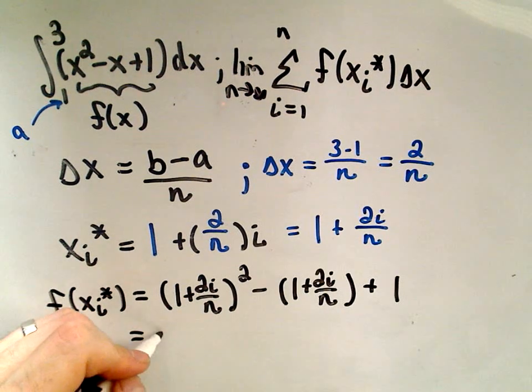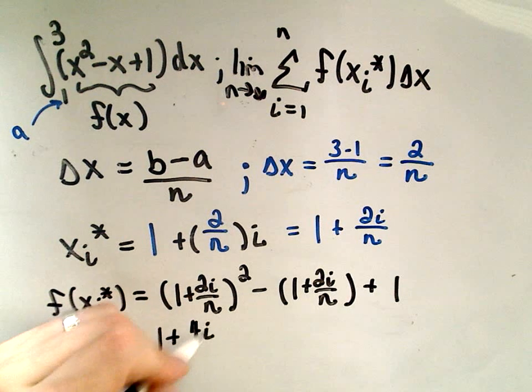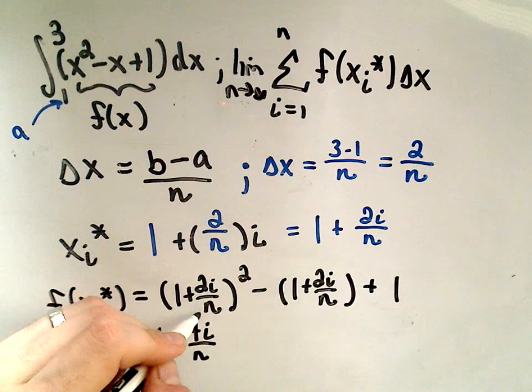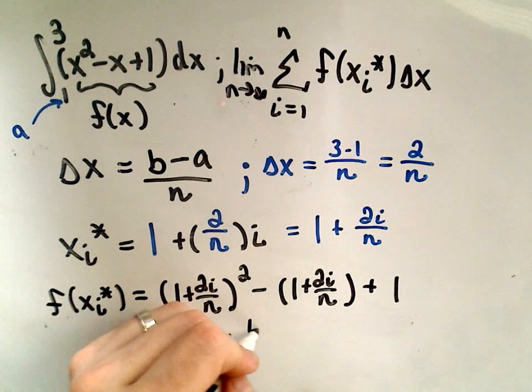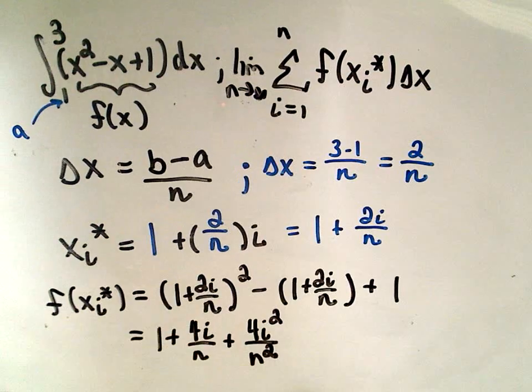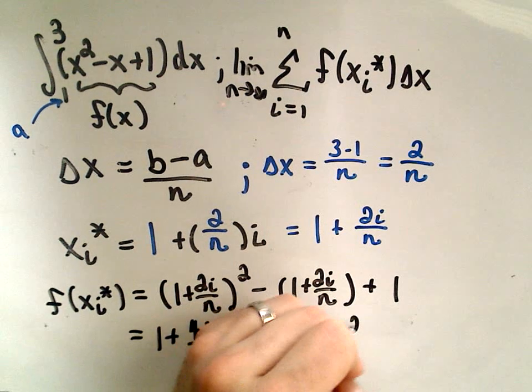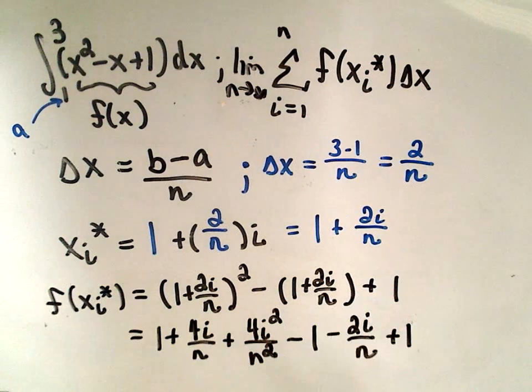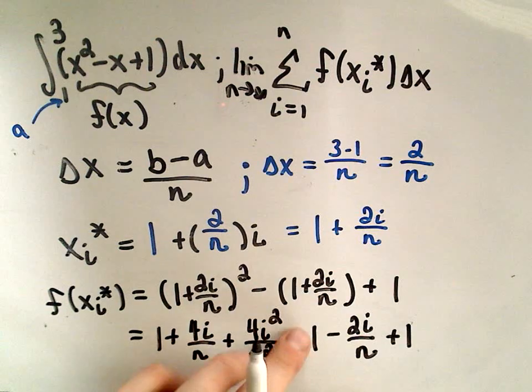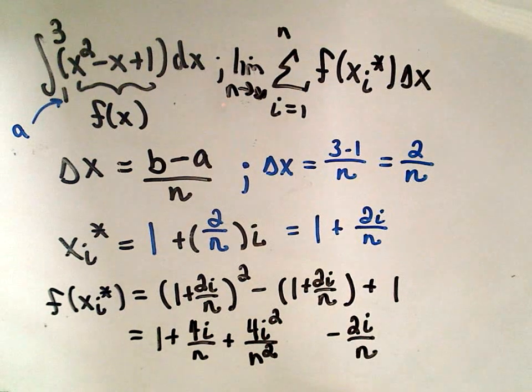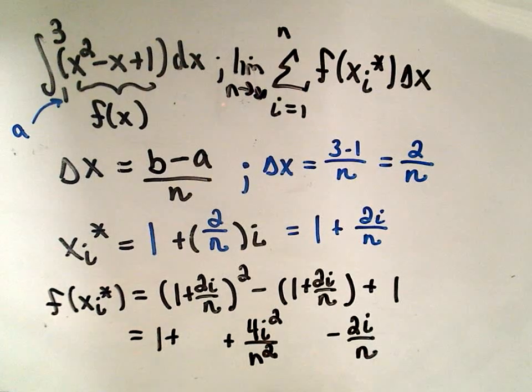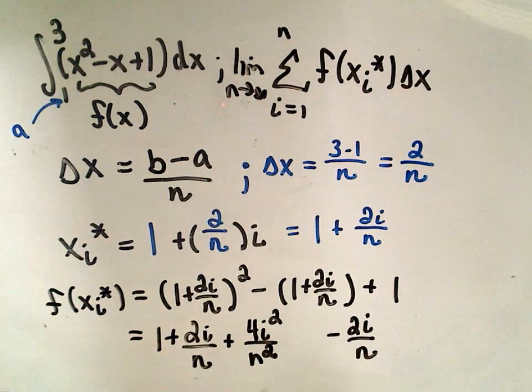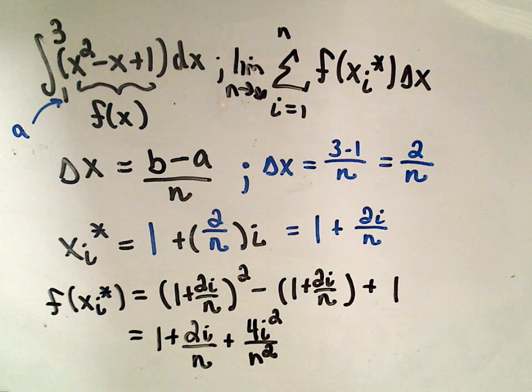If I were to foil this out, I believe I would get 1 plus 4i over n, because I would get 2i over n plus 2i over n, that would give me 4i over n. And then on the last part, I would get 4i squared over n squared minus 1 minus 2i over n. And then I have my plus 1 hanging out. The minus 1 and the plus 1 would just cancel out. I've got 4i over n minus 2i over n. That's going to leave me with a positive 2i over n after I subtract. So this is the value of our function f of x sub i star.